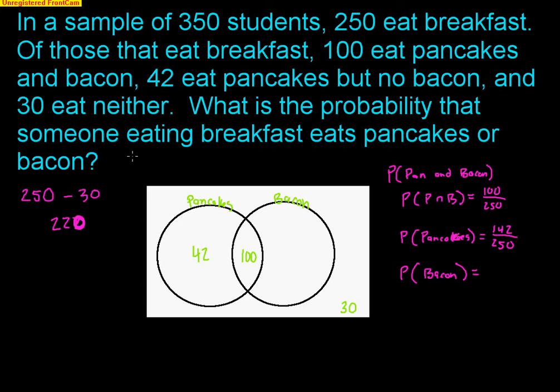The probability that somebody likes pancakes or bacon — remember, the union symbol means 'or' — is 220 out of 250. This should make a lot of sense. The opposite of neither is one or the other. If I have a blue marker or a red marker, if I have neither, I don't have either one. The opposite of neither is you have at least one — so you can have the blue, the red, or both. So the opposite of 30 would be the 220 kids that like bacon or pancakes.